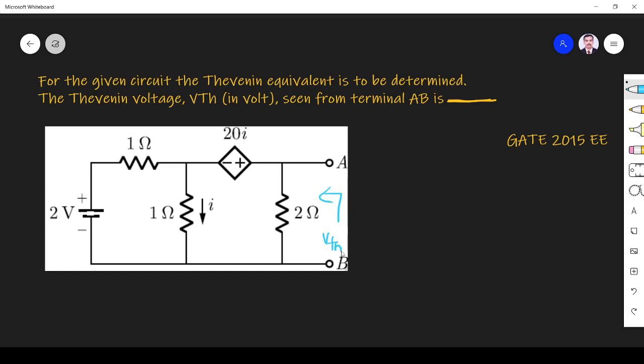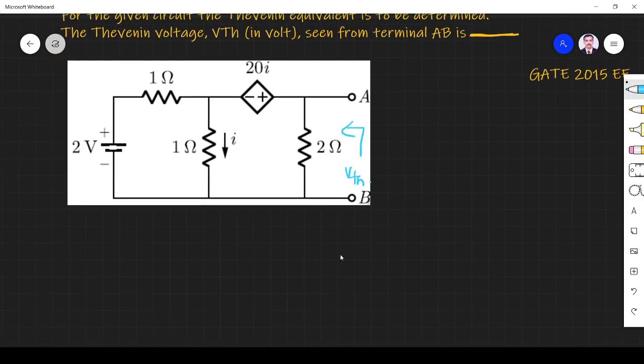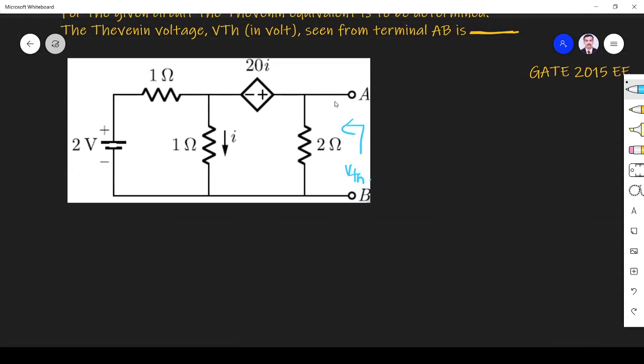VTh is nothing but open circuit voltage. So if I want to find voltage across AB, simply I need to find voltage across 2 ohm, that is enough. I apply KCL. Let us assume this node has potential V1, this node is V2.